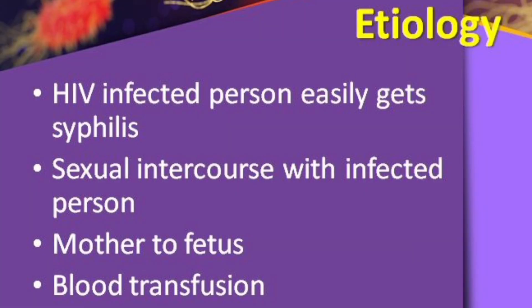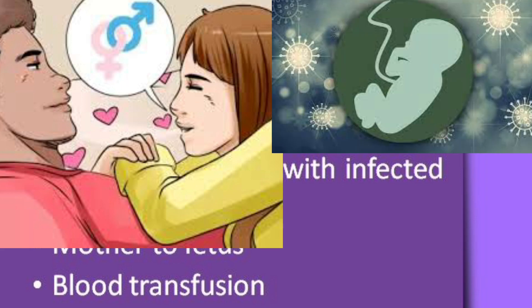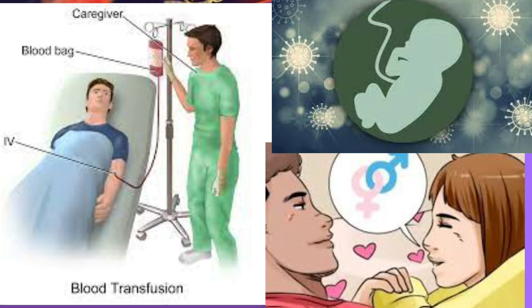Regarding etiology, HIV-infected persons are easily prone to syphilis because HIV leads to opportunistic infections. Other causes include sexual contact with an infected person, mother-to-fetus transmission, and blood transfusion — where if a syphilis carrier donates blood by mistake, the infection can spread rapidly.